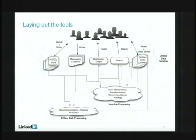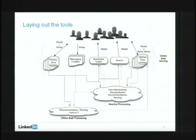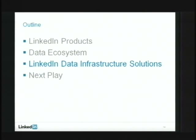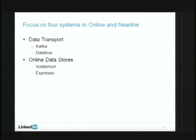Once you lay out the tools, it starts looking pretty complex — this is what a typical website with scale looks like. You've got your online data stores, primary stores, messaging tier, distributed graphs, and search, and then your nearline processing stores, processing layer, and your offline bulk processing layer. Today I'll focus on four systems in the online and nearline space: data transport with Kafka and DataBus, and online data stores with Voldemort and Espresso.